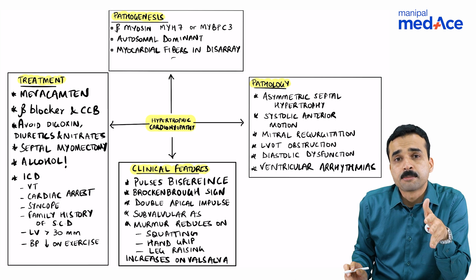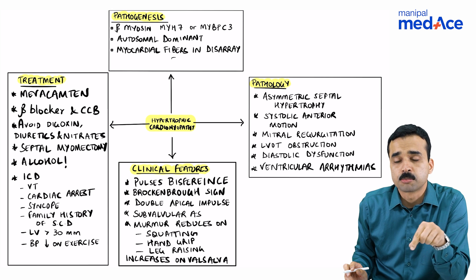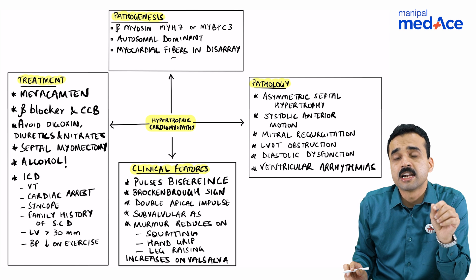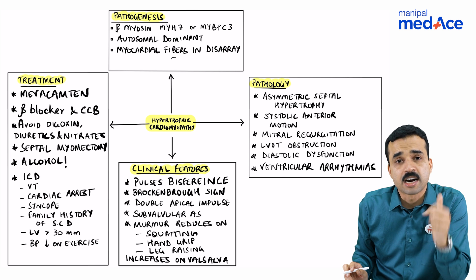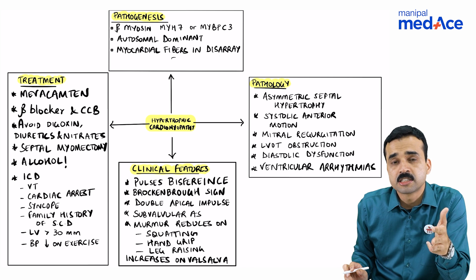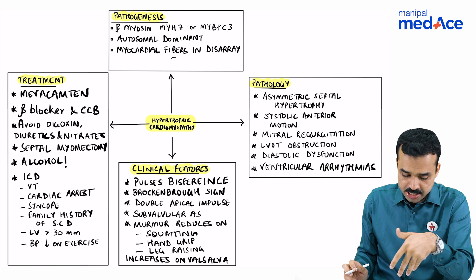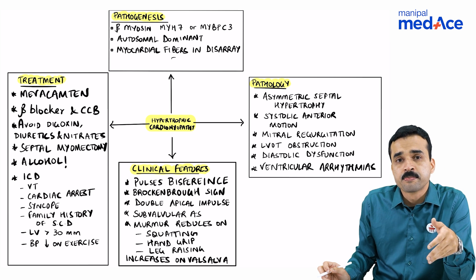Septal myotomy can be attempted, or alcoholic septal ablation can also be given to those who don't respond to medical therapy. ICD needs to be inserted in anybody who has had either a documented ventricular tachycardia sustained or unsustained, or has had cardiac arrest or syncope in the past, or a family history of sudden cardiac death, or if the patient has a left ventricular wall thickness of greater than 30 mm, or if there is a paradoxical drop in blood pressure to exercise.